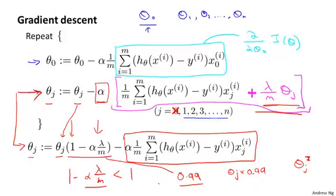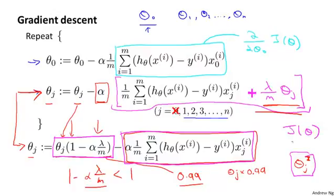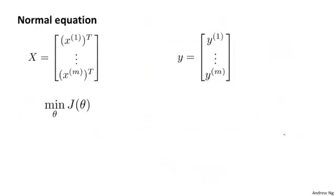Hopefully this gradient descent update makes sense. When we're using regularized linear regression, what we're doing is on every iteration, we're multiplying theta j by a number that's a little bit less than one, so we're shrinking the parameter a little bit, and then we're performing similar updates as before. Of course, that's just the intuition behind what this particular update is doing. Mathematically, what it's doing is exactly gradient descent on the cost function j of theta that we defined on the previous slide that uses the regularization term.